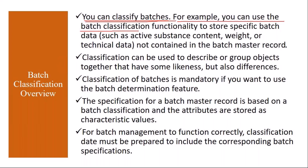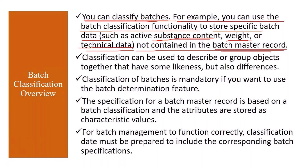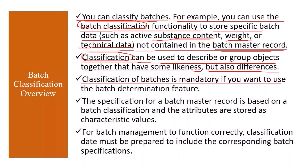We are classifying them based on certain features — that is called classification. For example, you can use the batch classification functionality to store specific batch data which is not contained in the batch master record. Suppose you want to store information about the batch like substance content, potency assay, weight, or other technical data — that is maintained using batch classification. This classification can be used to describe or group objects that have some likeness but also have differences.